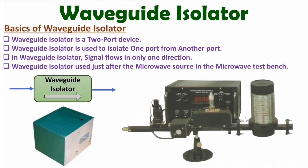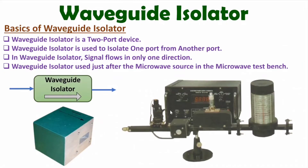This isolator is isolating this supply with respect to the microwave circuit. So if any reflection happens, that reflected signal cannot go back to this supply. To protect this supply, we are using waveguide isolator — signal can flow in this direction only, so reflected signal cannot appear at the supply as it is isolated by this waveguide isolator. So waveguide isolator is a two-port device where signal flows in one direction only.